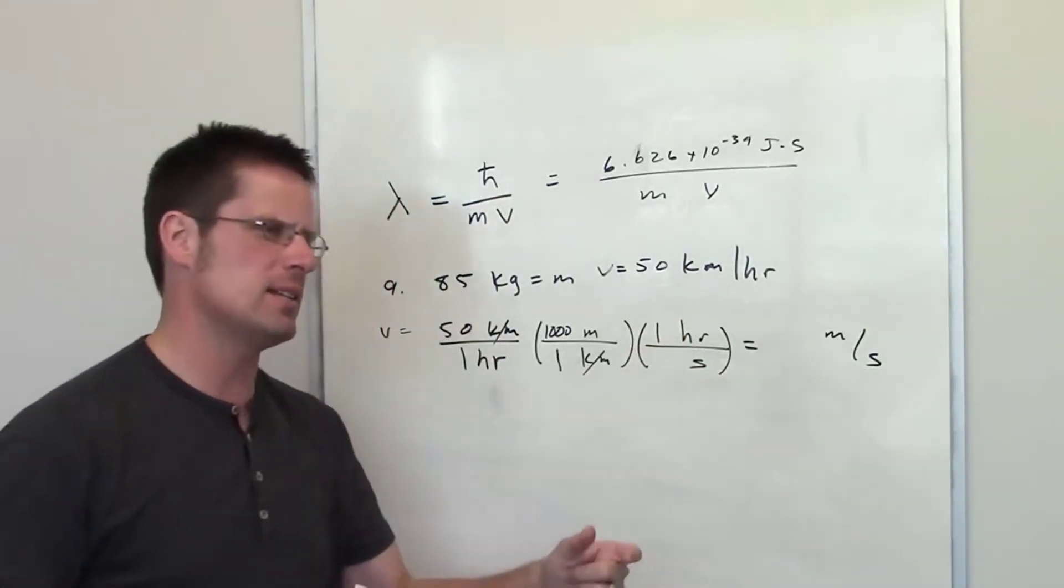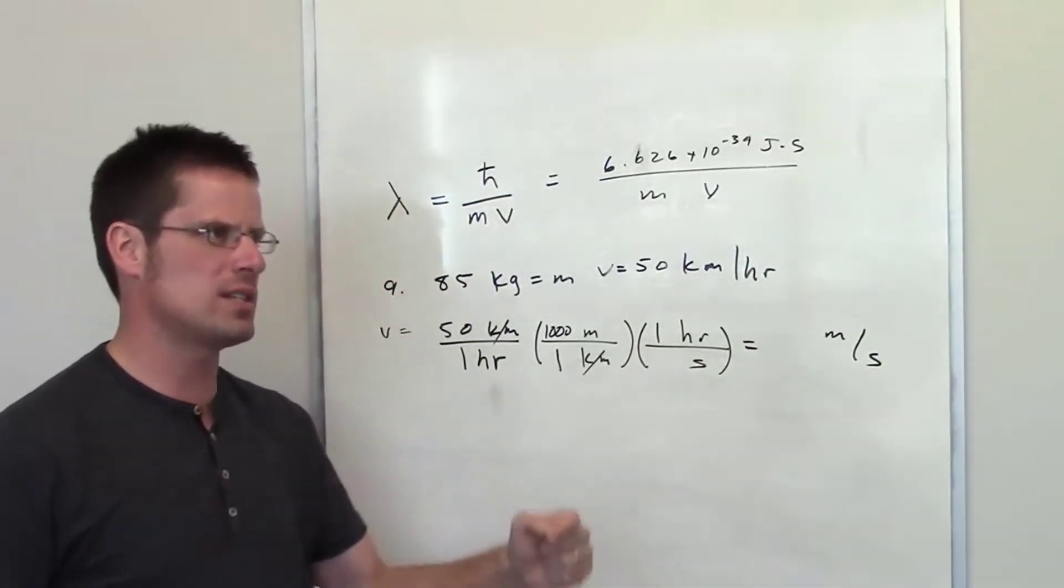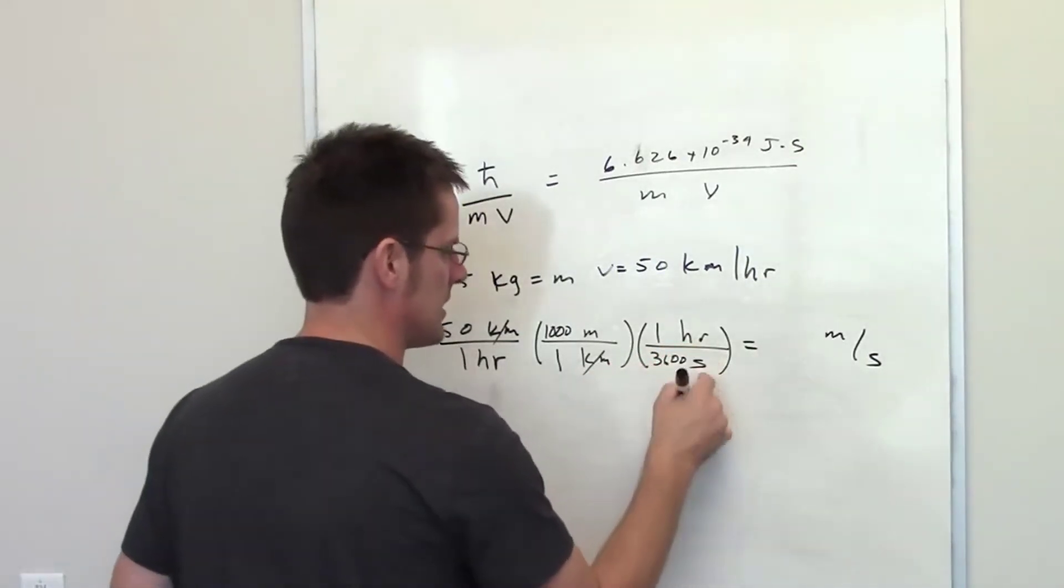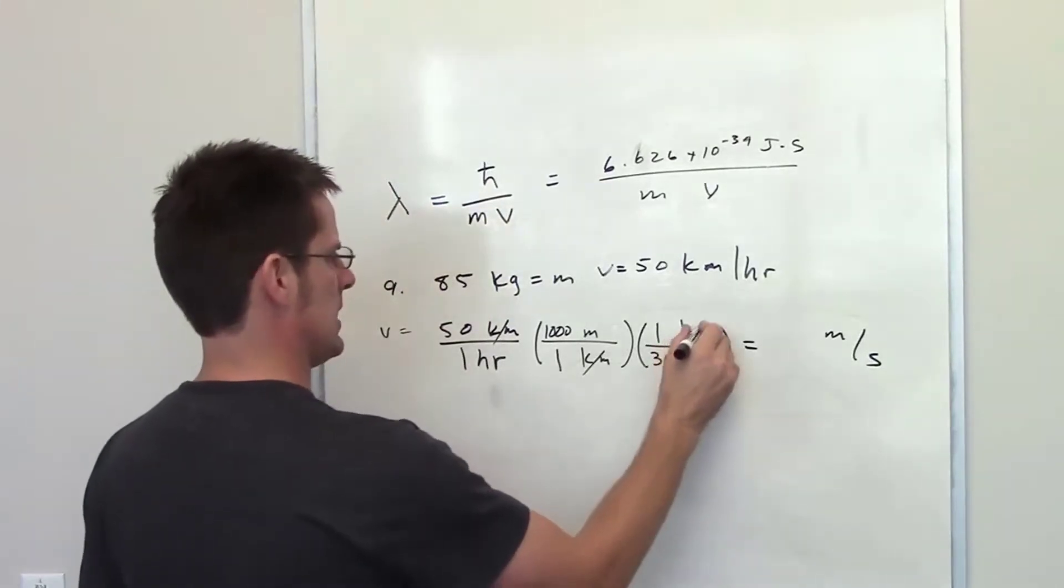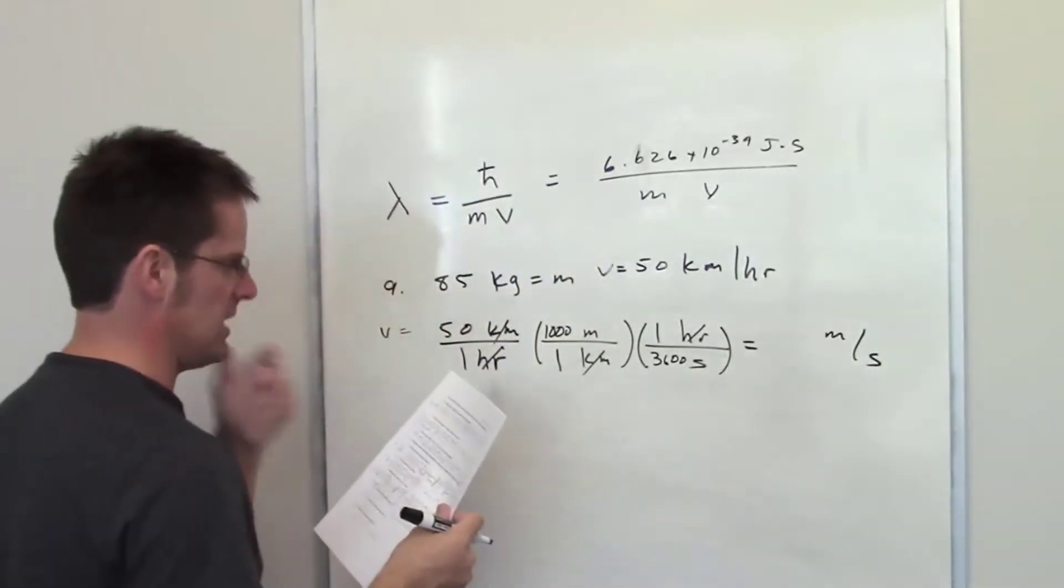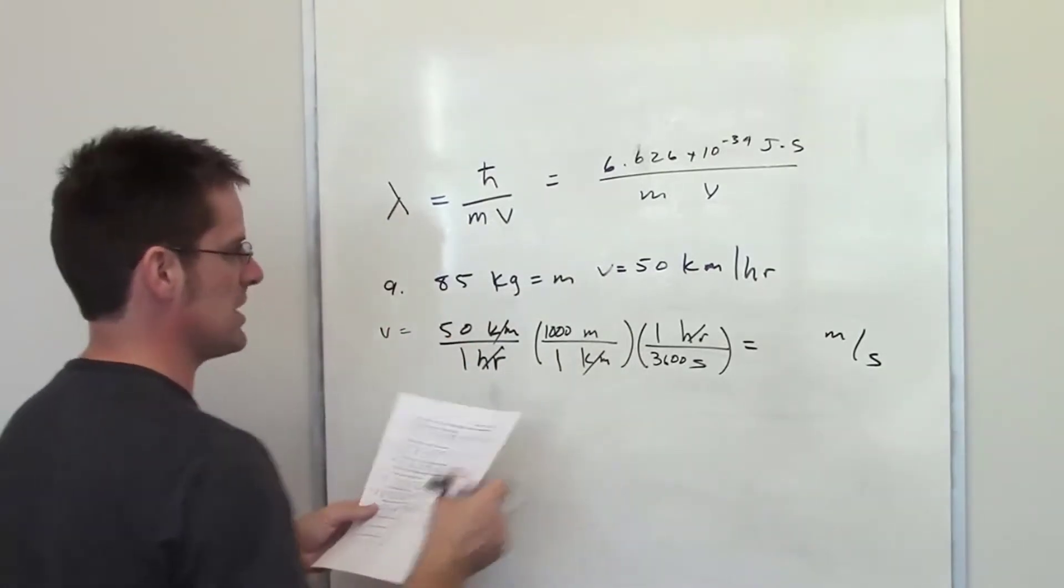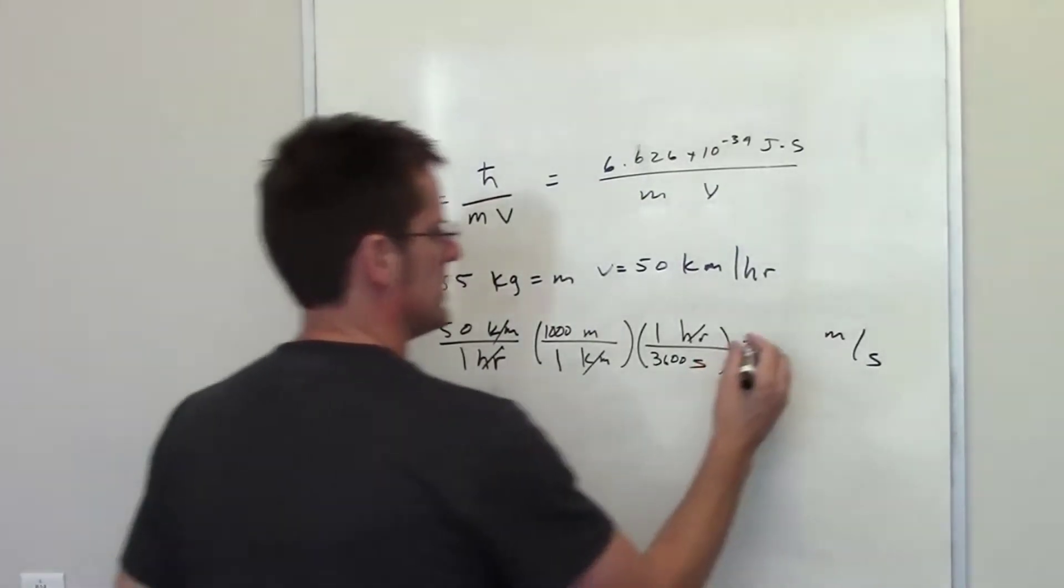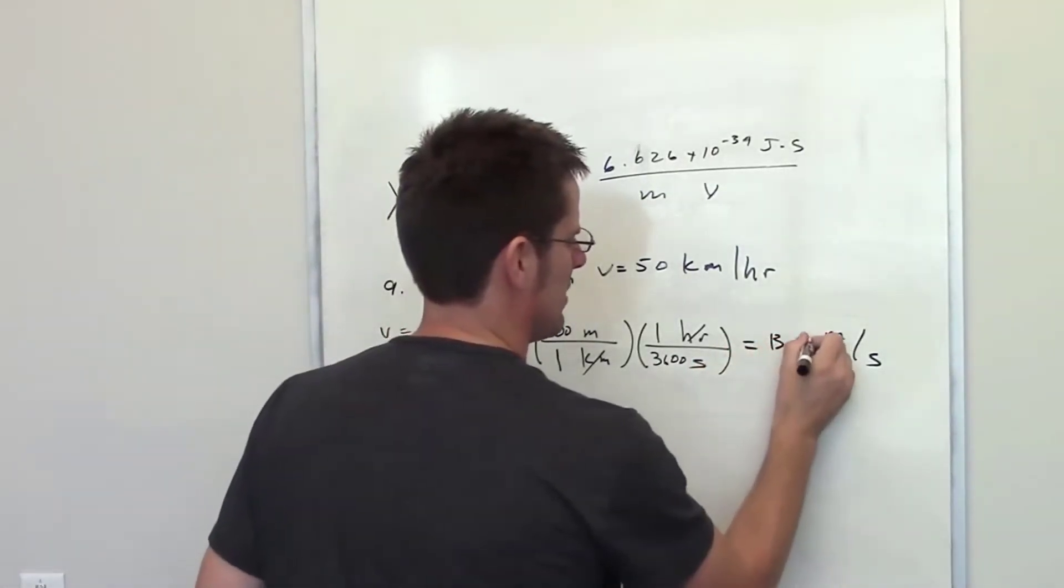In one hour, how many seconds do I have? There are 60 seconds in a minute, 60 minutes an hour, so 60 times 60 is 3,600. In my calculator, I end up discovering that the velocity is 13.89 meters per second.